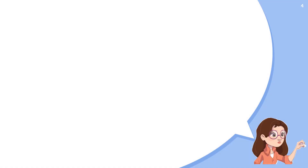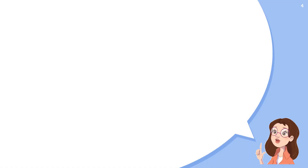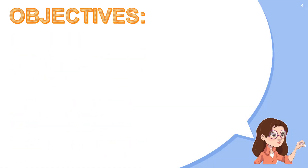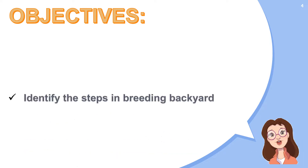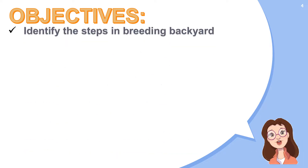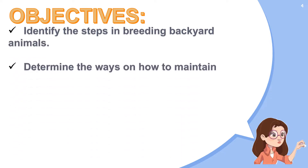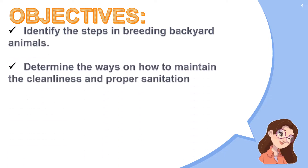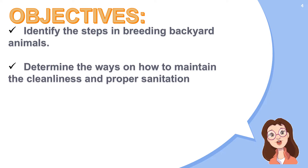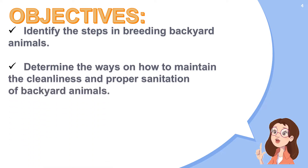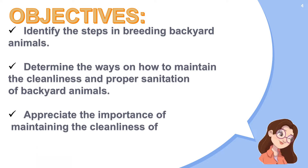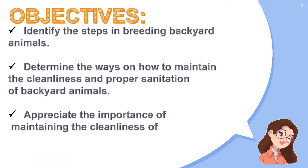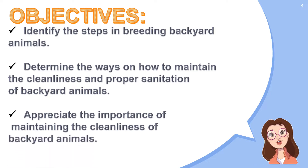And here are our objectives. At the end of the discussion, the students must be able to: first, identify the steps in breeding backyard animals; second, determine the ways on how to maintain the cleanliness and proper sanitation of backyard animals; and third, appreciate the importance of maintaining the cleanliness of backyard animals.